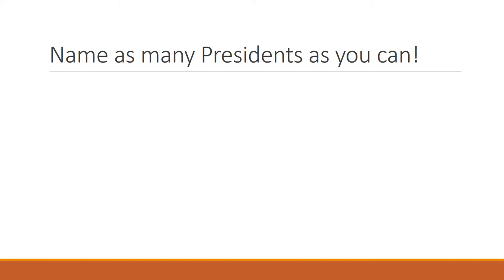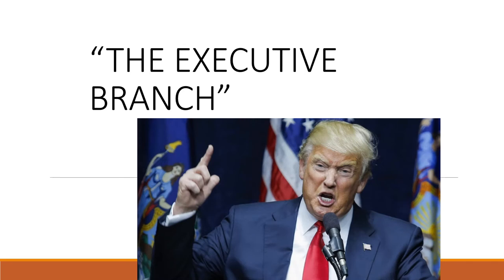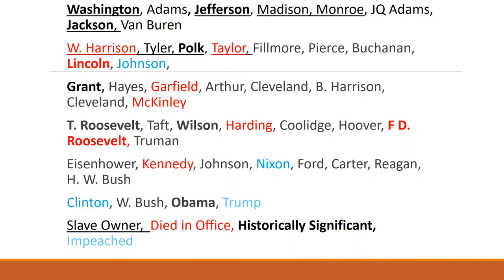We're covering the executive branch, and here is our current leader. Here is our big giant list of all the presidents we've had. I put a little key at the bottom to explain the color coding. We've had about 44 presidents — Trump is 45 — but there's one double dipper, a guy named Cleveland who was president two non-consecutive times.